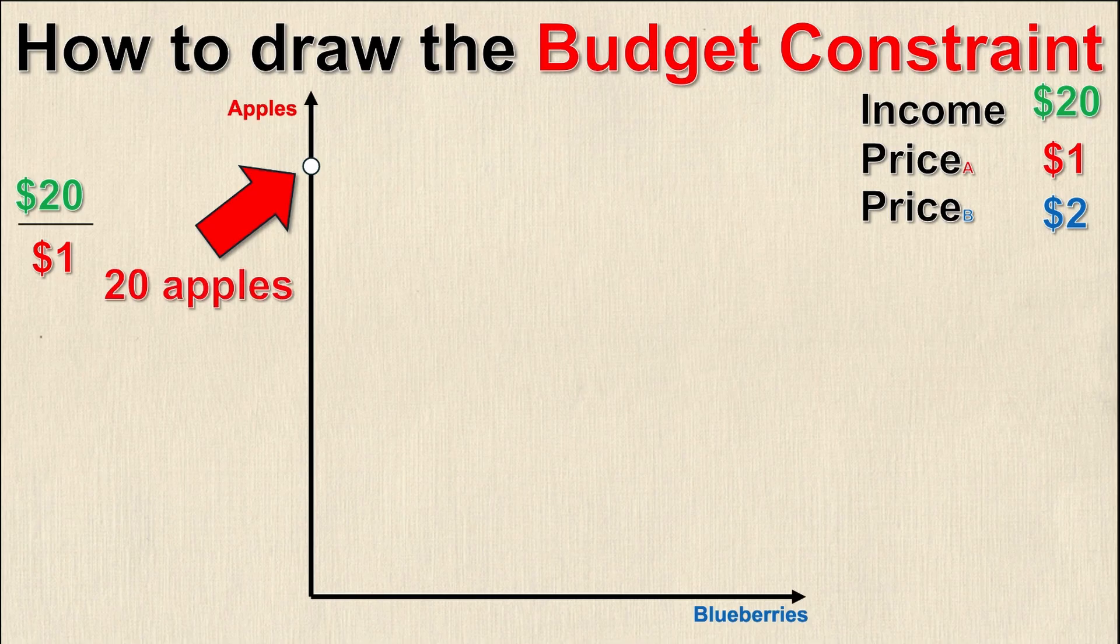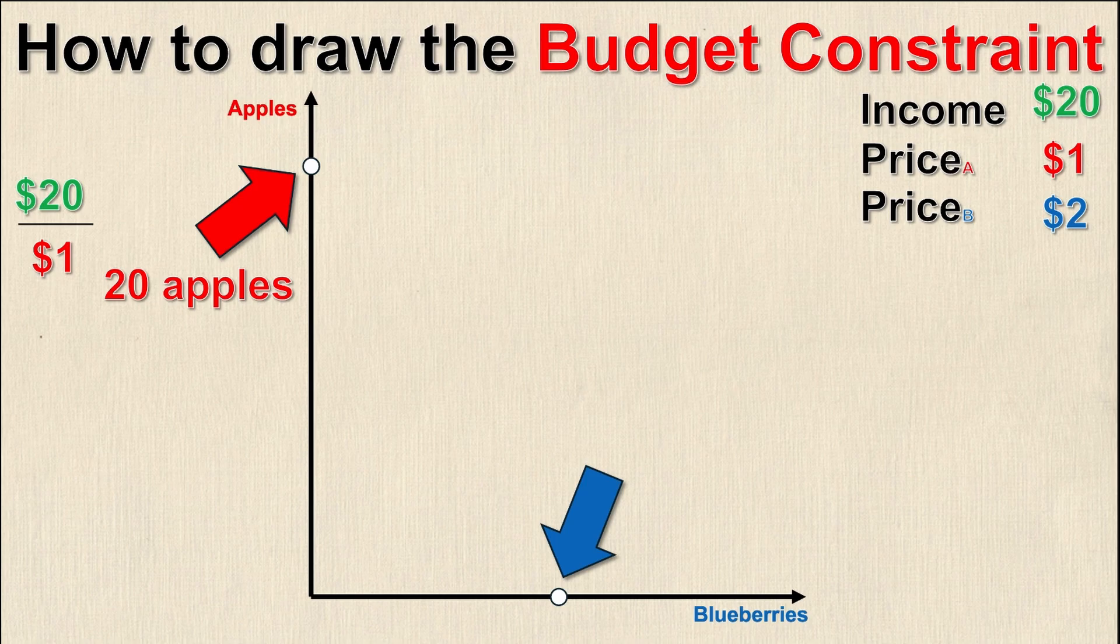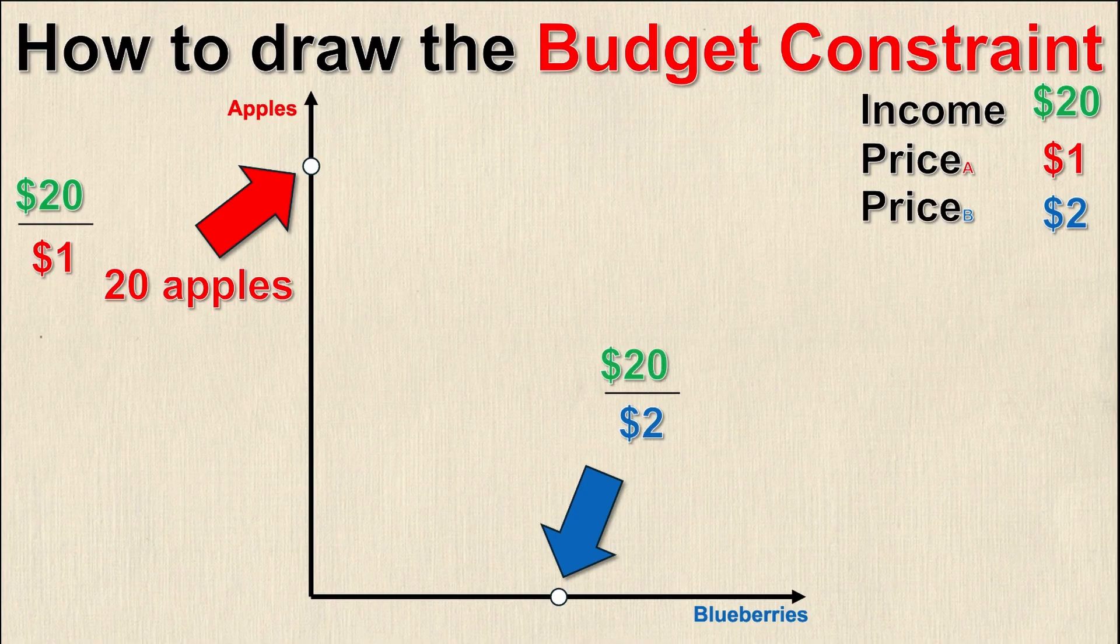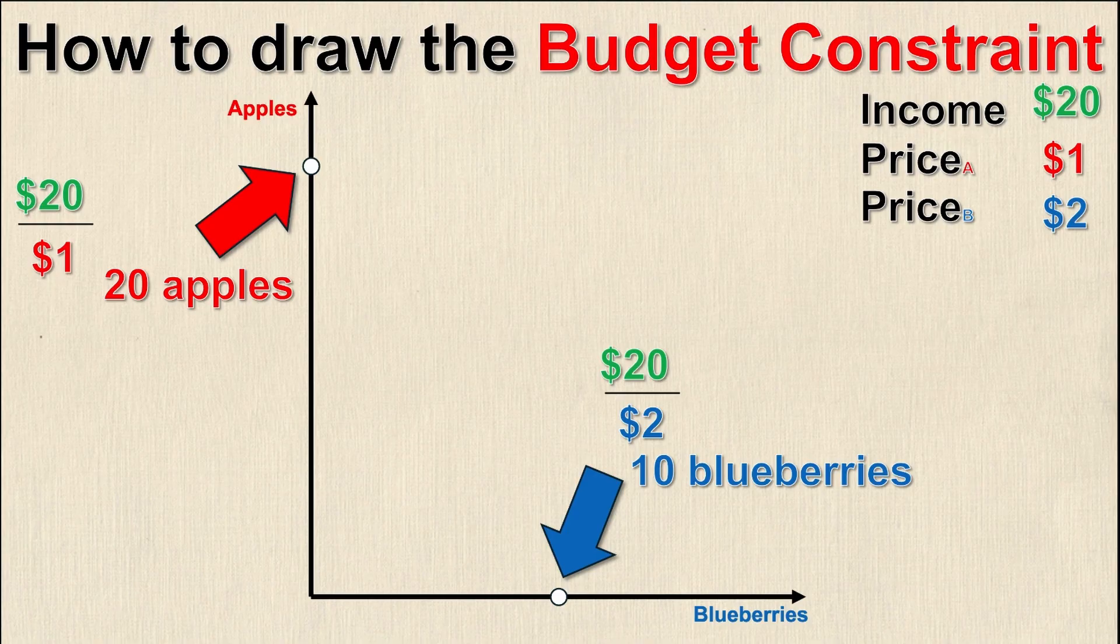Similarly, I have an x-intercept where apples are zero and blueberries are where I spend all my income. If I take my $20 and divide it by the price of blueberries, $2, that gives me 10 units of blueberries. Not 10 individual blueberries, but honestly I live in Canada, groceries are expensive, so maybe it is 10 individual blueberries, I don't know.